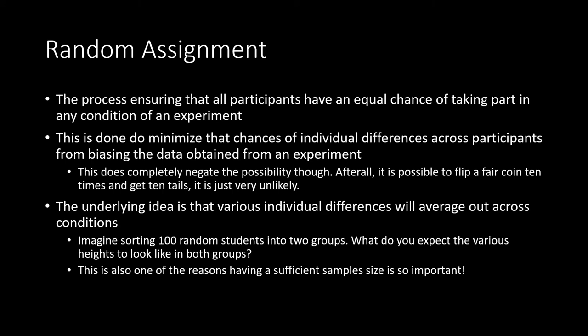When I spoke about random assignment, I was referring to the process of ensuring all participants have an equal chance of taking part in any condition. This just means that I have a group of people who come to take part in my experiment, which has multiple conditions, and I randomly sort them into the various conditions. An easy way to imagine this would be an experiment with only two conditions where you flip a coin — based on heads or tails, you put people into either group A or group B. This is done to minimize the chances of individual differences across participants biasing the data. It doesn't completely negate the possibility — it's possible to flip a fair coin 10 times and get 10 tails, it's just very unlikely.